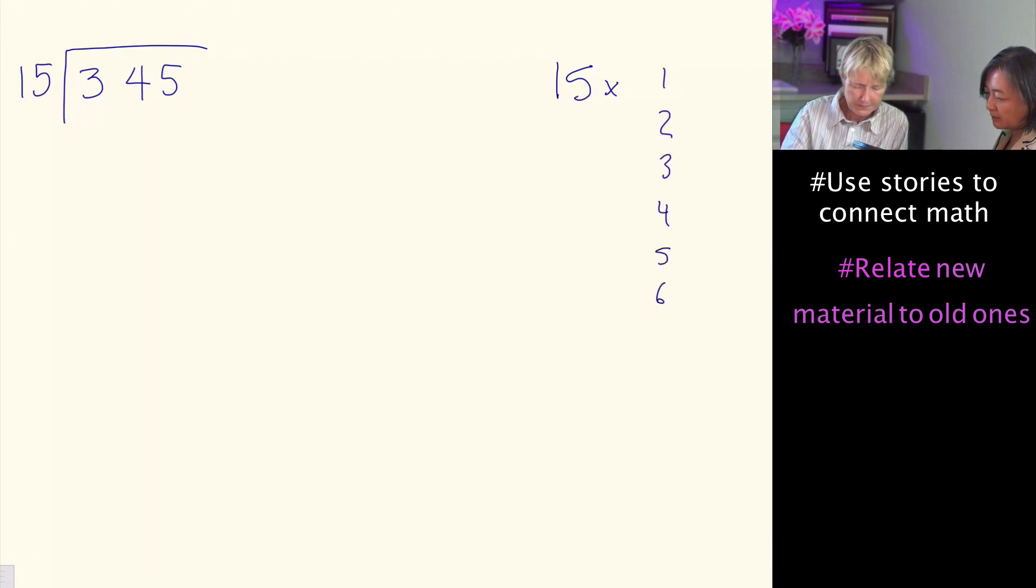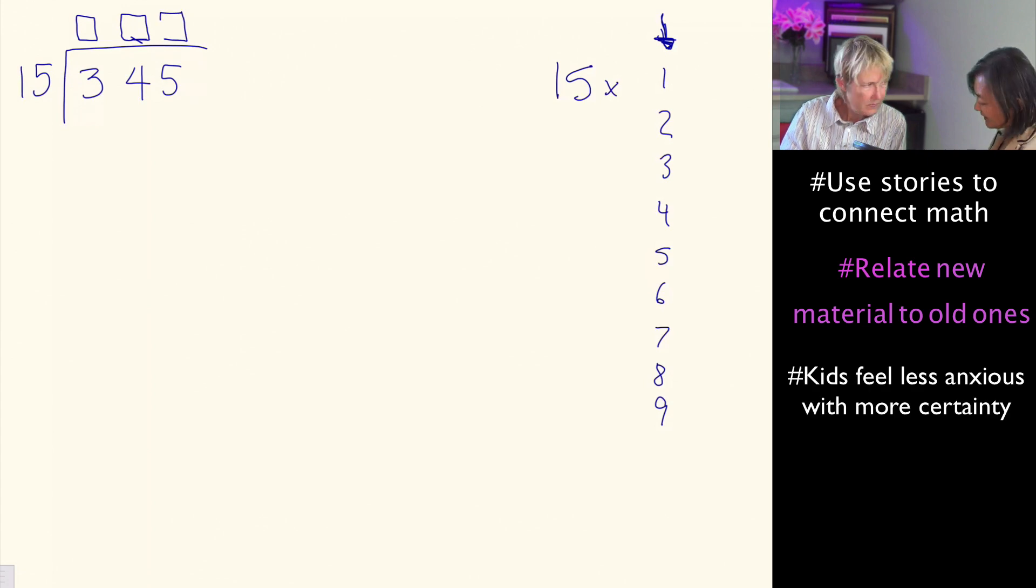We're looking for a magic number to say, okay, 15 times what is going to go in this box over here. The reason I put a box is that with kids, if they have certainty, they feel less anxious. You're less likely to make a mistake if it's very clear that the box goes over the hundreds, over the tens, over the ones.